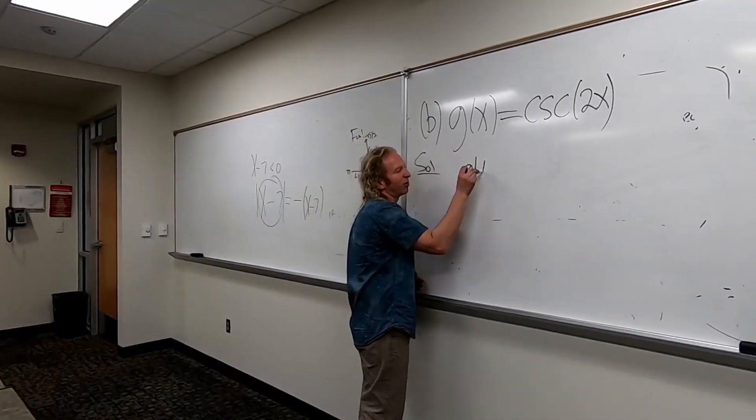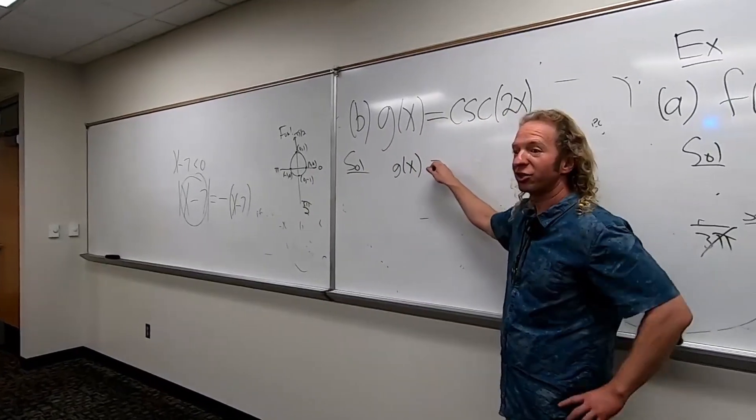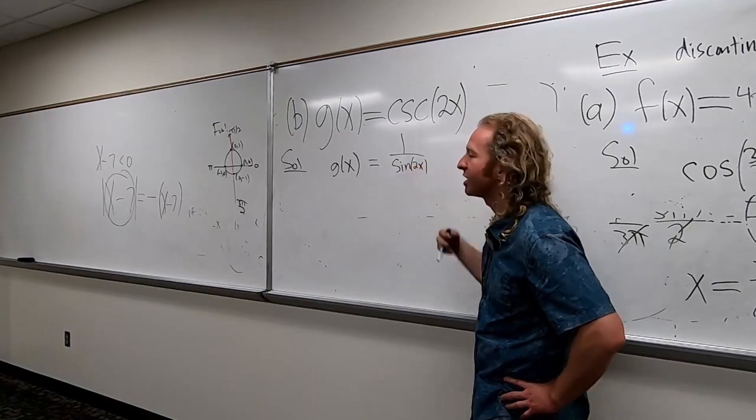So the first thing you do is rewrite it. Cosecant is 1 over which function? Sine. So step 1, you do this. Rewrite it like this. That's the first step.